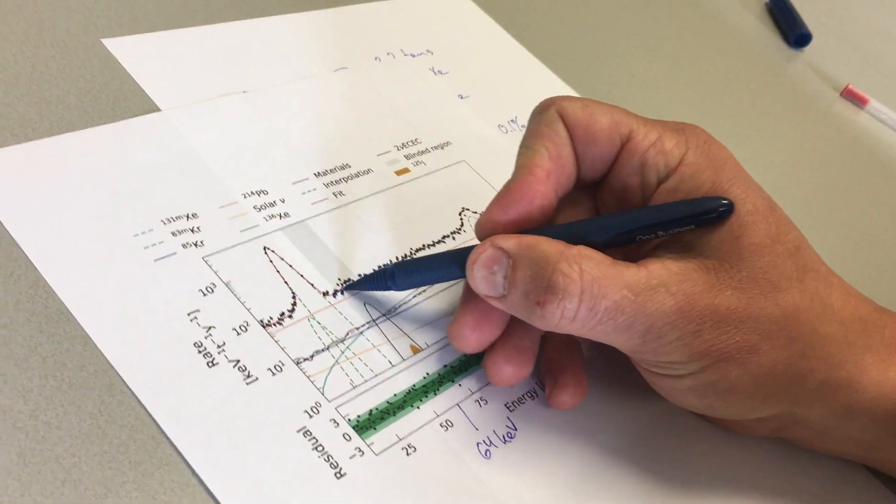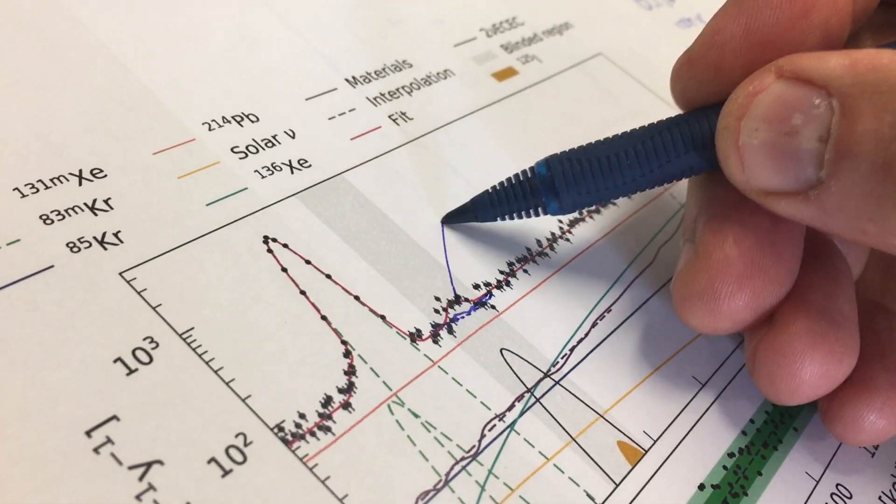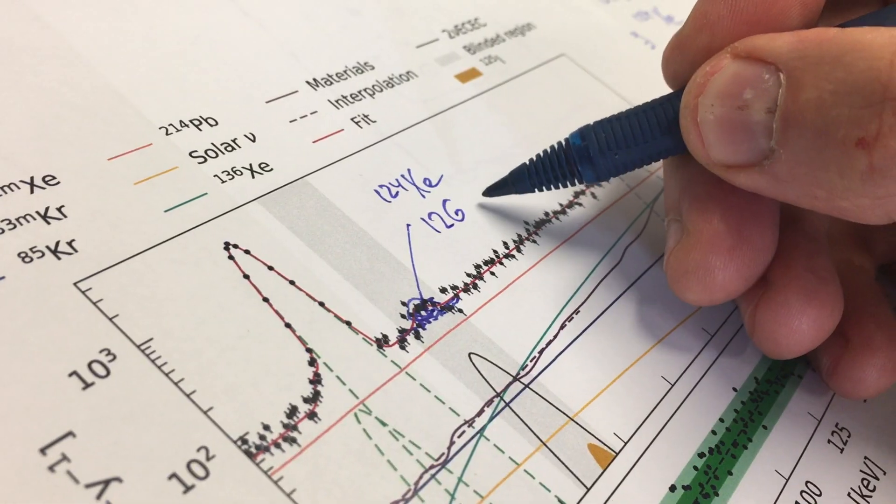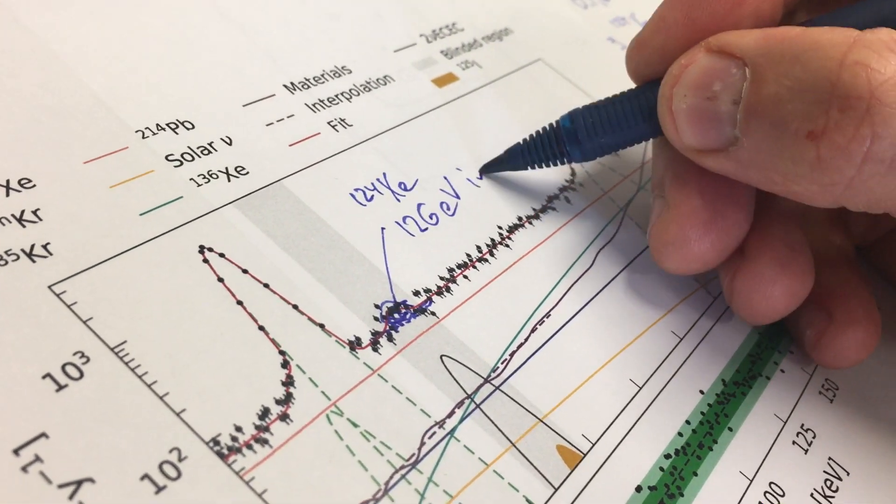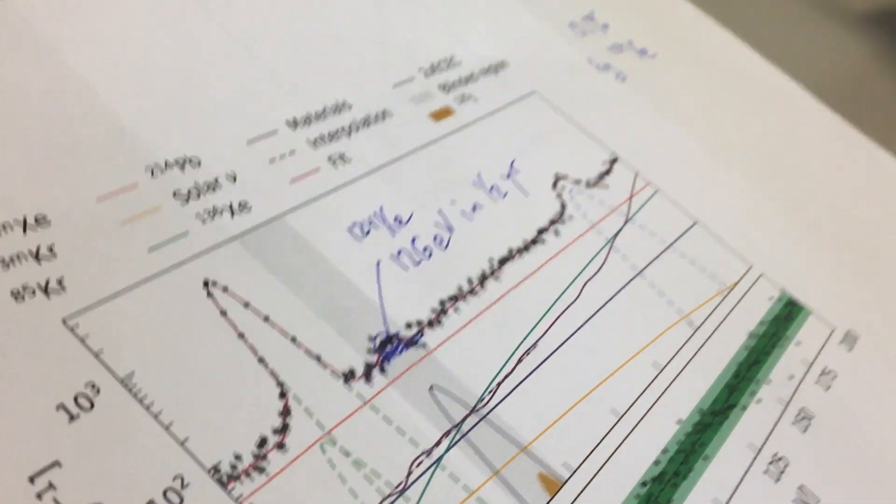And what you see here is that relative to a straight line, there's a tiny little bump here, with 126 events in one half year of data taken.